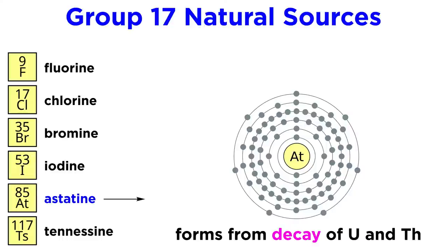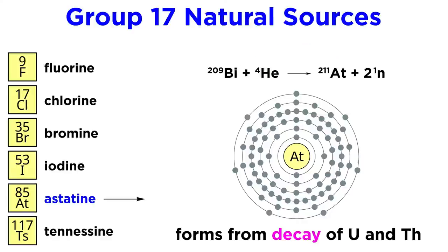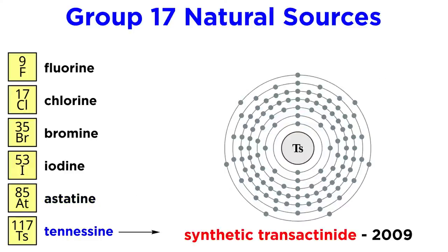Astatine is formed from the decay of uranium and thorium in certain ores. It has 32 isotopes, the most stable of which has a half-life of about eight hours. It can also be made synthetically by alpha bombardment of bismuth-209. Tennessine is another strictly synthetic transactinide element, first made in 2009, and its most stable isotope has a half-life of 80 milliseconds.